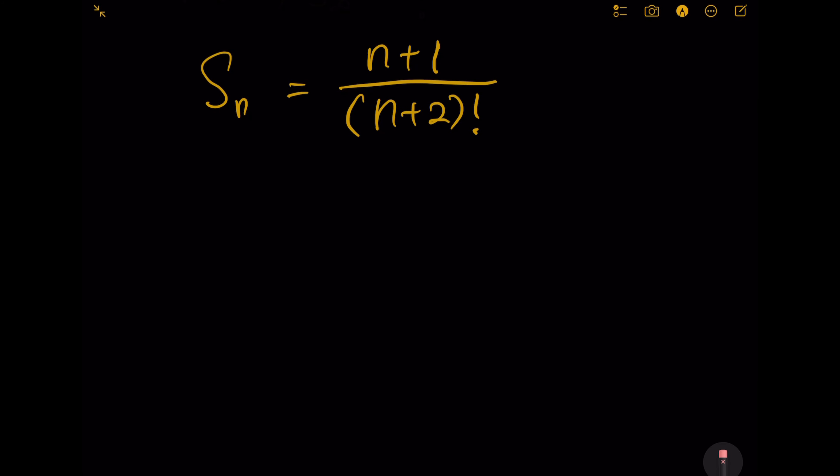Instead of directly finding S infinity, our strategy is to transform n plus 1 divided by n plus 2 factorial into something else, into two different terms.